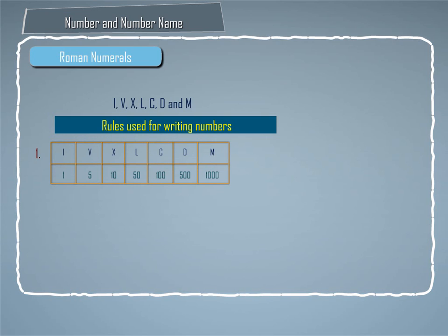Rule 1: The value of each symbol is given in the table below. Here, I stands for 1, V stands for 5, X stands for 10, L stands for 50, C stands for 100, D stands for 500, and M stands for 1000.